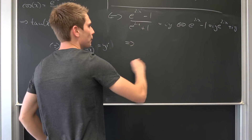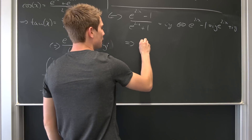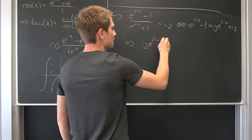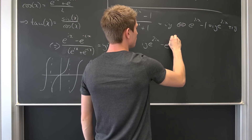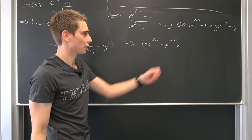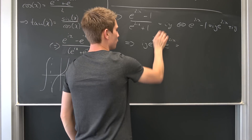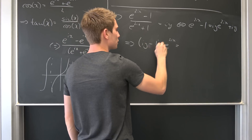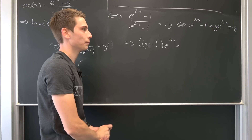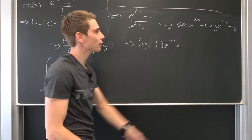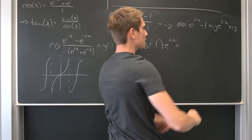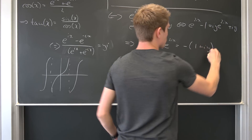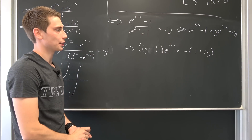So on one hand we have i·y·e^(2ix) − e^(2ix), which we factor as e^(2ix)·(i·y − 1). On the right-hand side we have −1 + i·y. Now we can divide both sides by the term (i·y − 1), making sure it's not equal to 0.